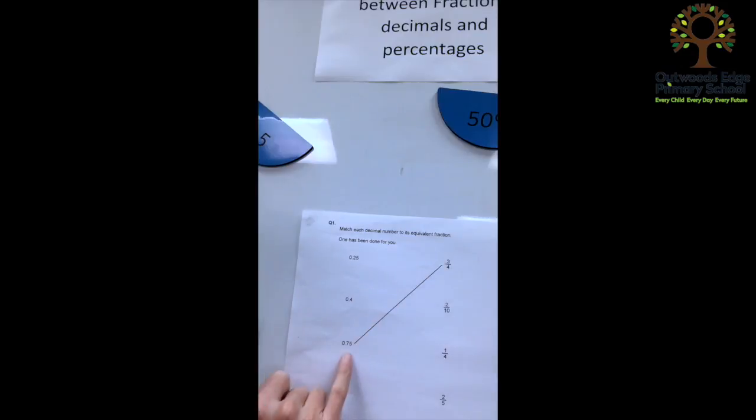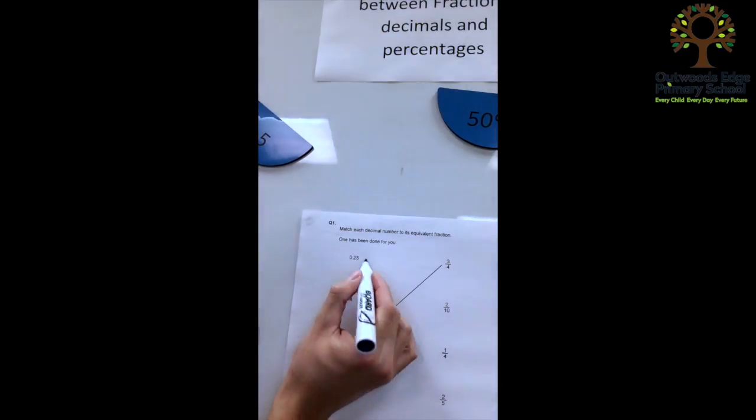Remembering that 3 quarters is 0.75 is another one that's really helpful for the children to try and remember. Hopefully, they've retained that knowledge that 0.25 is the same as a quarter. So what we can do with that is match that one up.